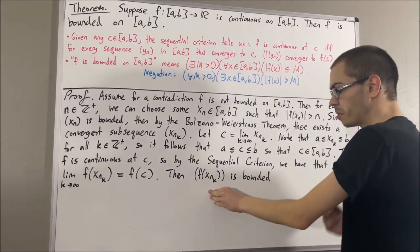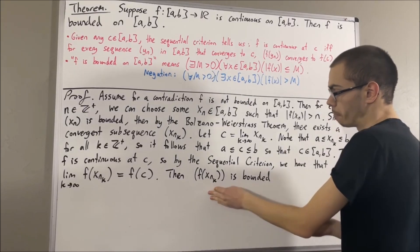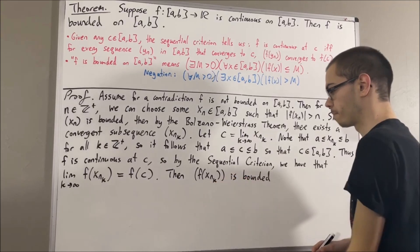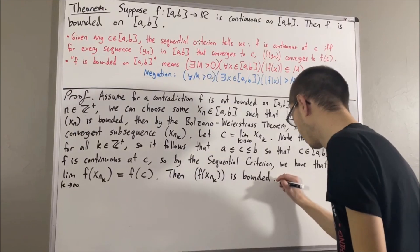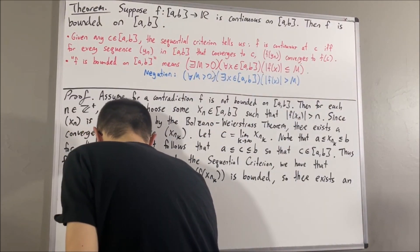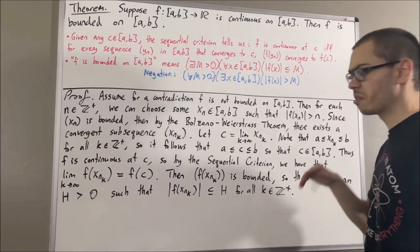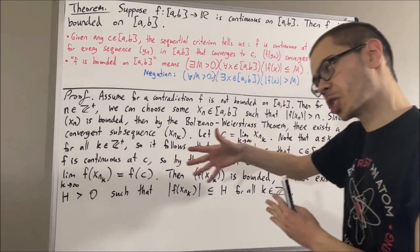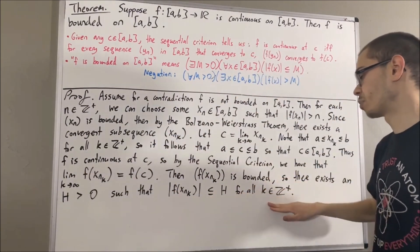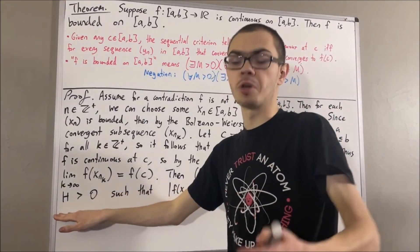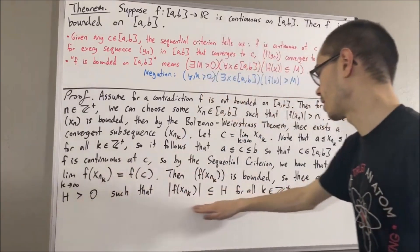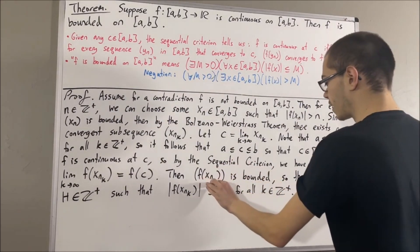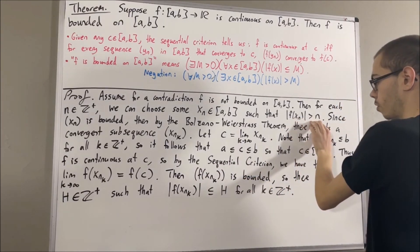To say f(xnk) is bounded means there exists some positive real number h such that the absolute value of f(xnk) is less than or equal to h for all positive integers k. So the absolute value of every term in this sequence is less than or equal to h. Since we can find a positive integer bigger than h that also satisfies this property, it's safe to assume that h is a positive integer.